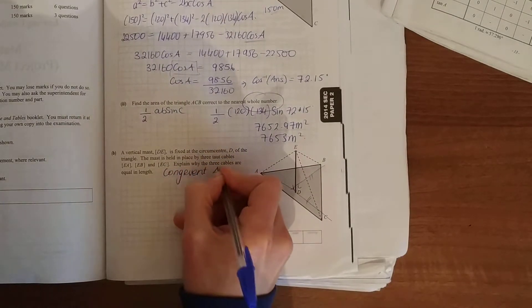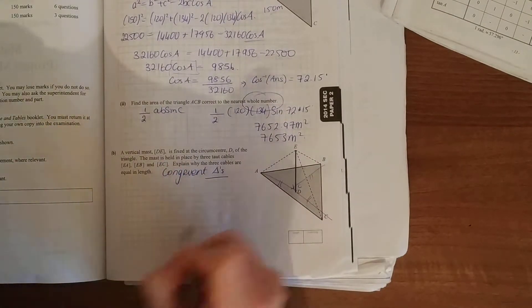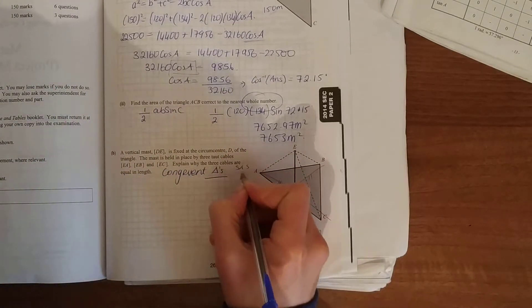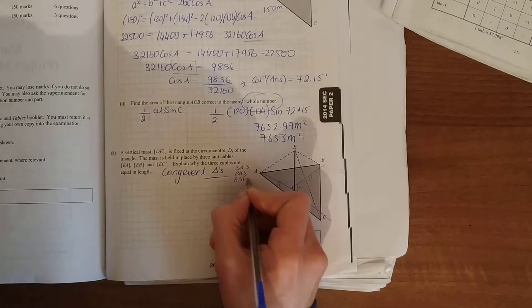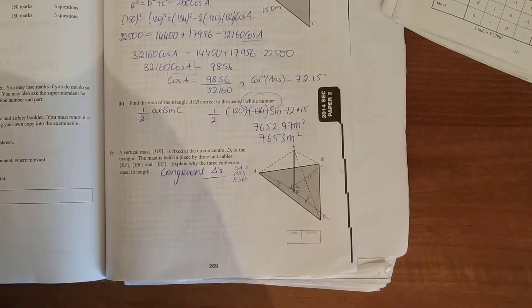So congruent triangles, you're looking for SAS (side angle side), RHS (right angle hypotenuse side), ASA (angle side angle). If they can satisfy these criteria, they're congruent triangles.